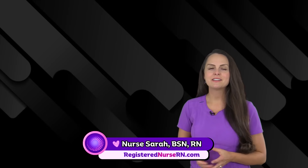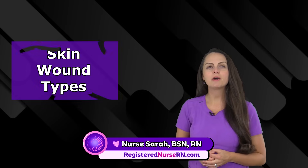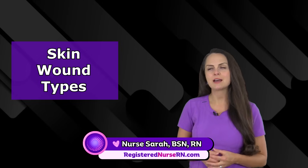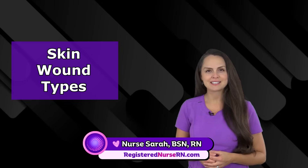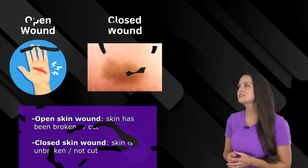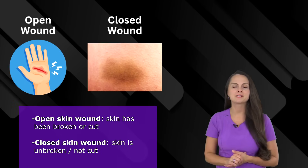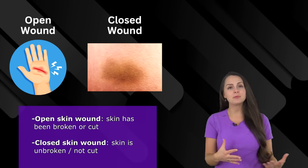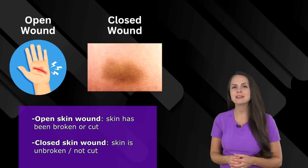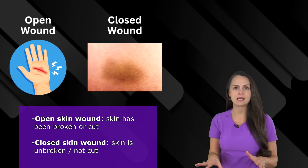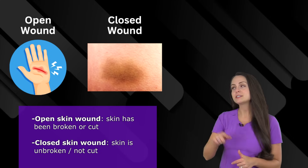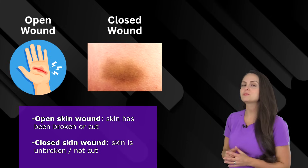Hey everyone, it's Nurse Sarah and in this video I'm going to go over the different types of skin wounds. So let's get started. Skin wounds can be classified as being open or closed. An open skin wound means that the skin is no longer intact, versus a closed wound where the skin is intact.